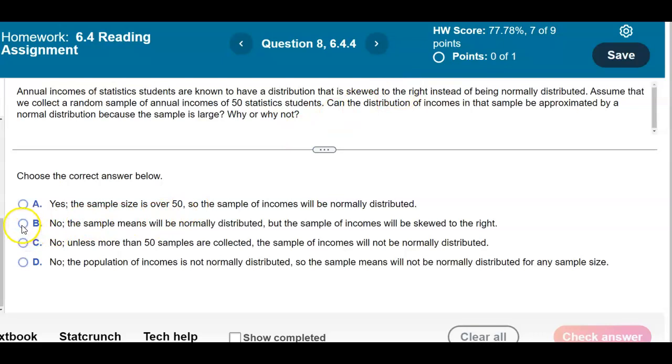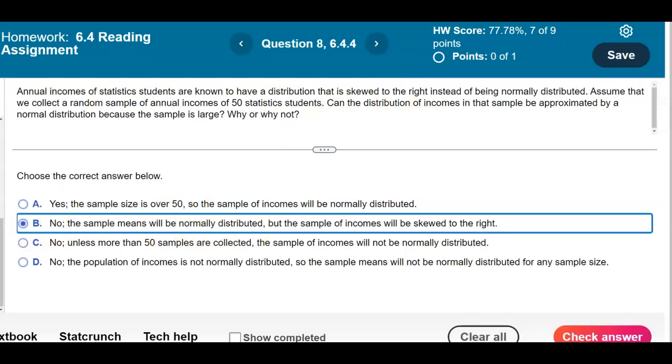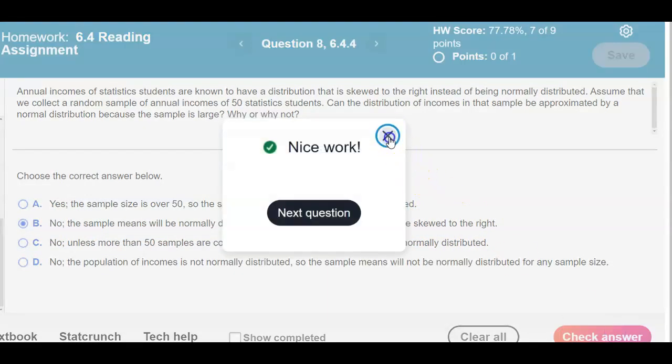So therefore, we would say no, the sample means will be normally distributed, but the sample of incomes will be skewed to the right. And there's our answer.